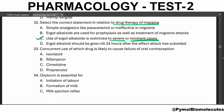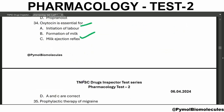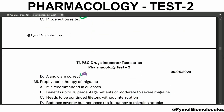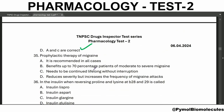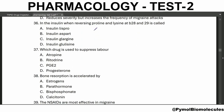Concurrent use of which drug is likely to cause failure of oral contraception? It is rifampicin. Oxytocin is essential for initiation of labor and milk ejection reflex — so both A and C are correct. Prophylactic therapy of migraine benefits up to 70% of patients with moderate to severe migraine.